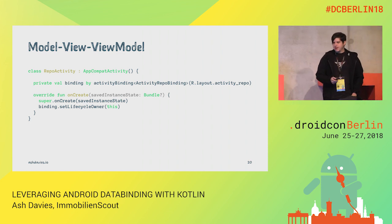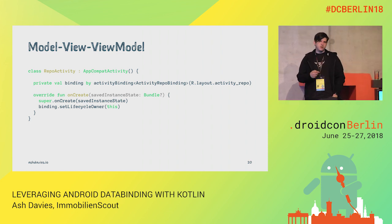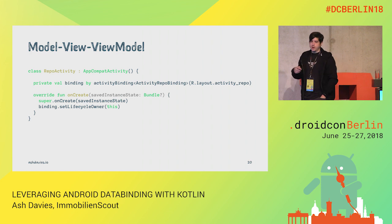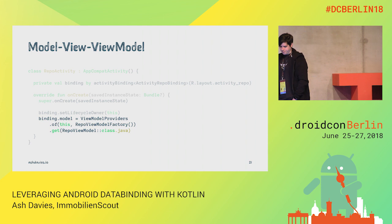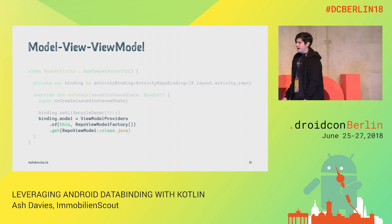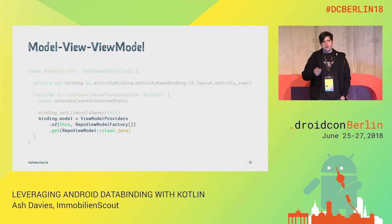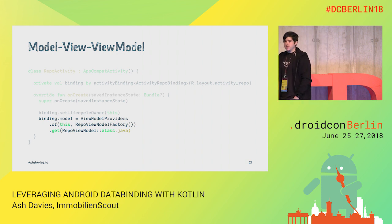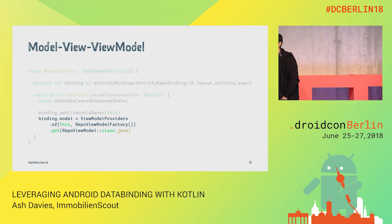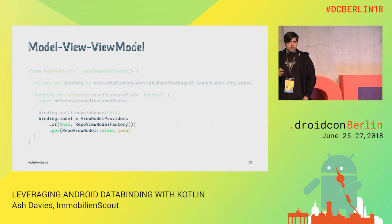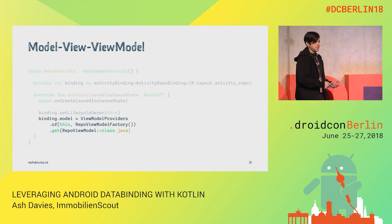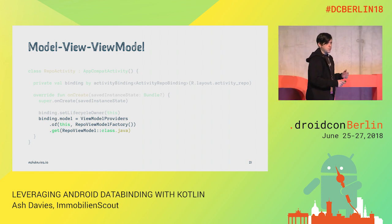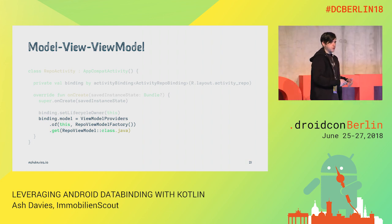Here's our activity as it was before, and we need to apply our model to our binding so we can access it from our view and start writing binding expressions. We access the view model through use of ViewModelProviders from the AppCompatActivity, and we provide a factory to instantiate the view model if it hasn't already been created. We have to make sure to do this in onCreate, because otherwise the activity will not have a chance to restore its view model store.